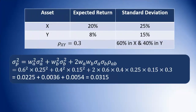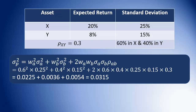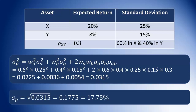For the standard deviation, we're working with the variance formula. The portfolio variance equals 0.6 squared times 0.25 squared, plus 0.4 squared times 0.15 squared, plus 2 times 0.6 times 0.4 times 0.25 times 0.15, then multiplied by the correlation coefficient of 0.3. That solves to 0.0315. For the standard deviation, we take the square root of that figure, which gives 0.1775, or 17.75%.